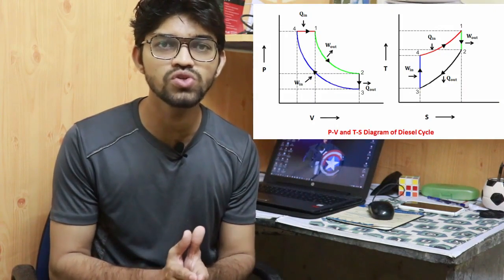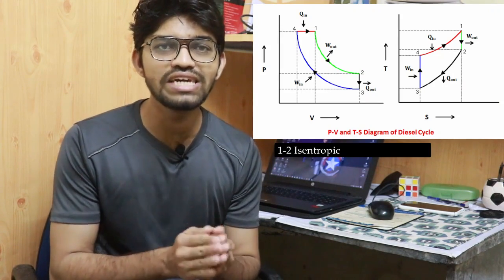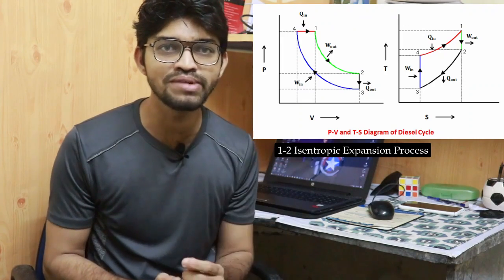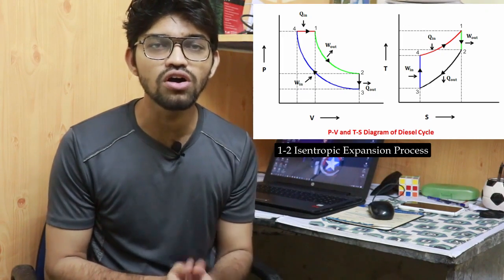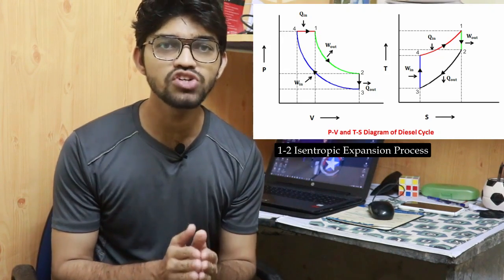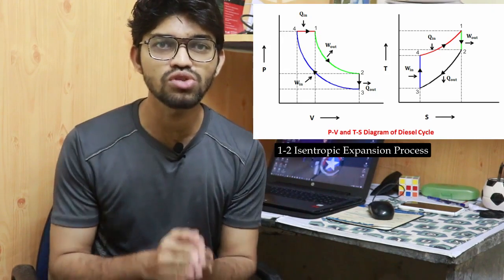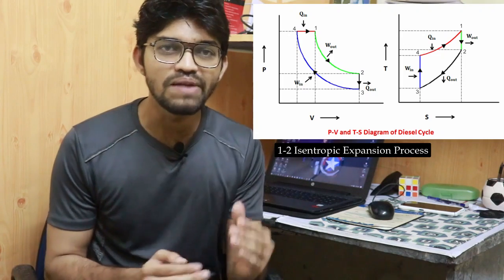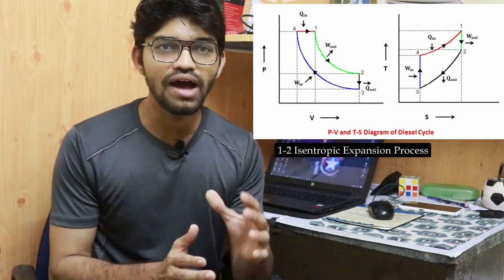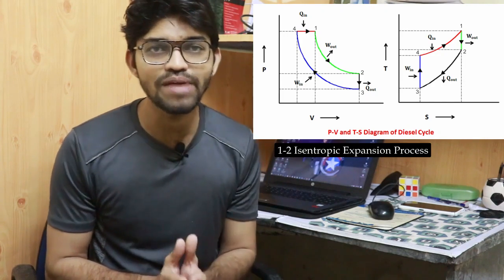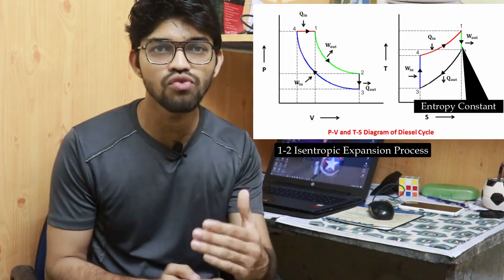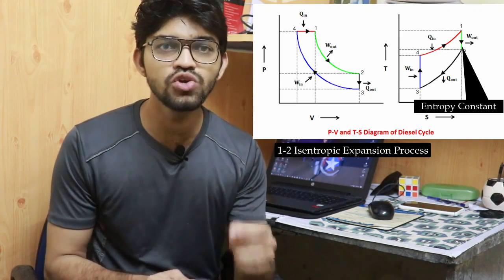Process one to two is the isentropic expansion process. The piston moves from top dead center to bottom dead center, the expansion occurs, volume increases, and pressure reduces. This is the isentropic expansion, so entropy remains constant. In practice, heat will always be lost, but theoretically the temperature also falls during this process.